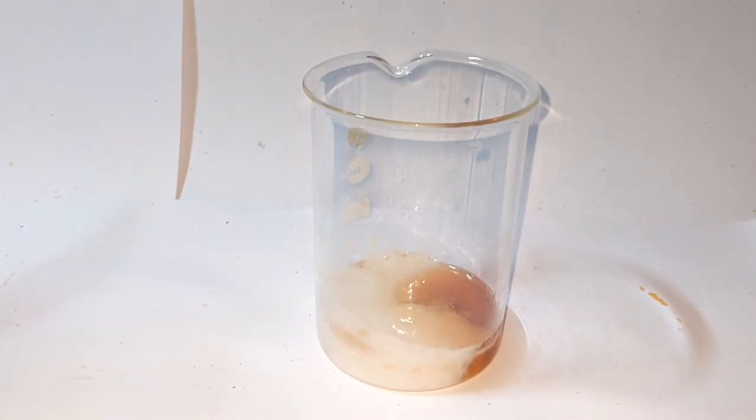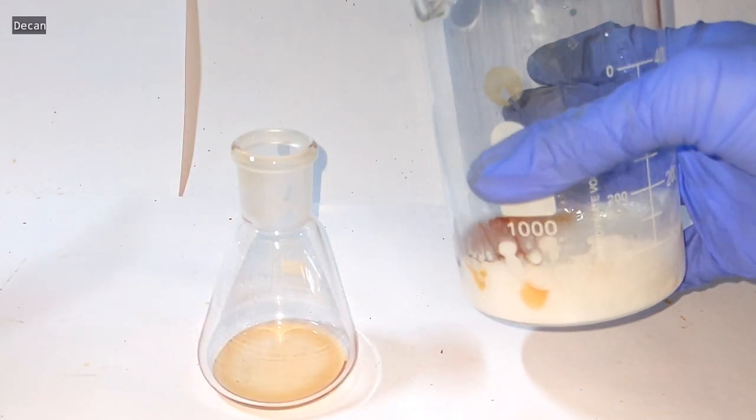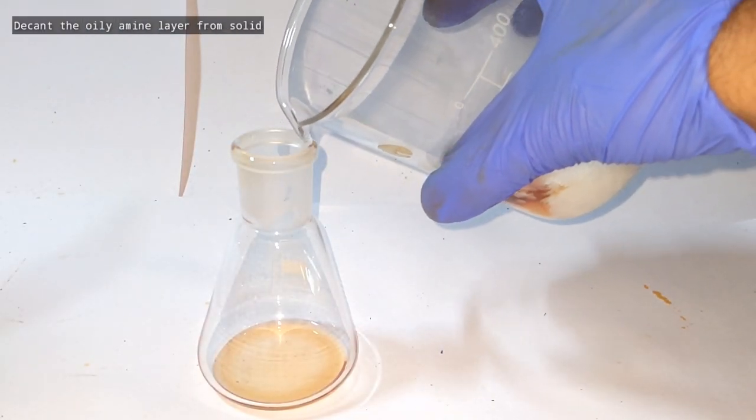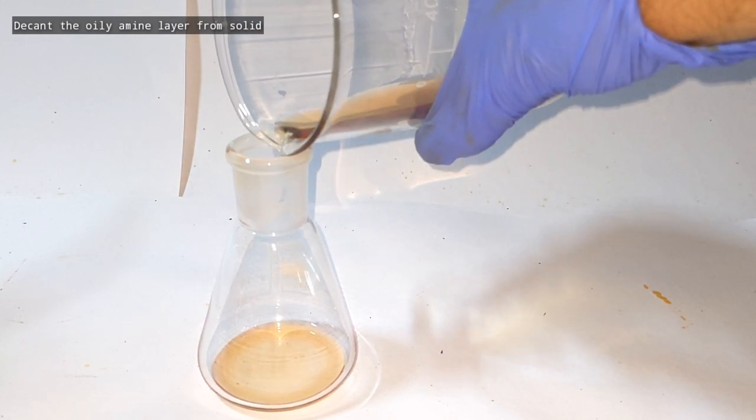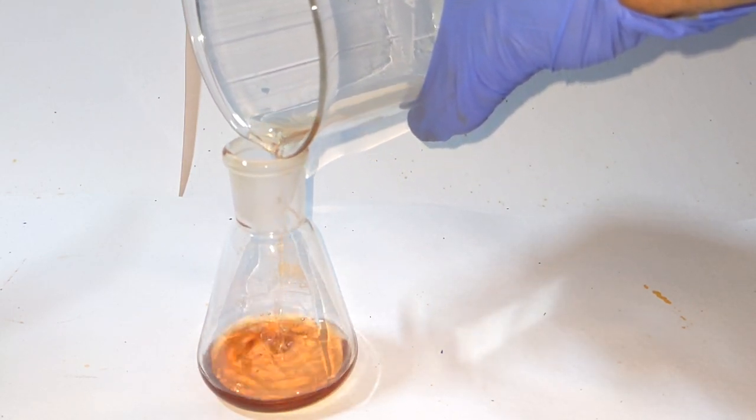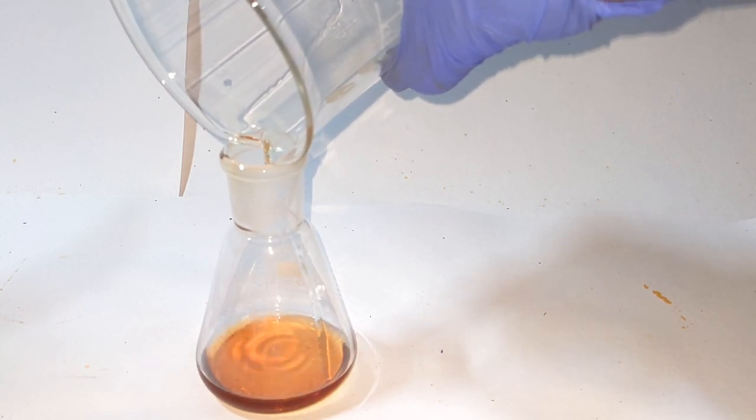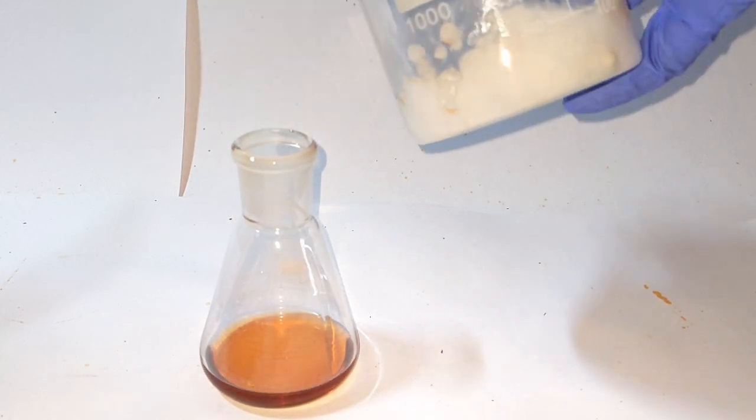After about six hours the aqueous phase is completely solidified due to the crystallization of sodium phosphate and the oily amine remains as the liquid. Now most of the amine was merely decanted into a 100 ml Erlenmeyer flask.